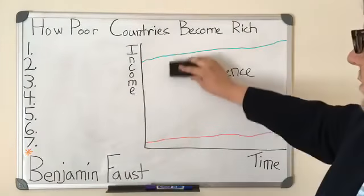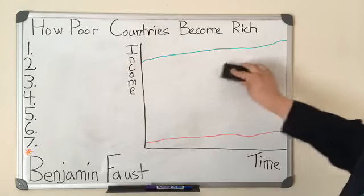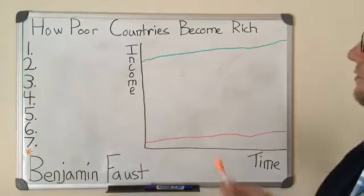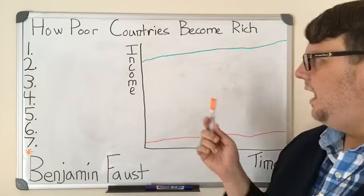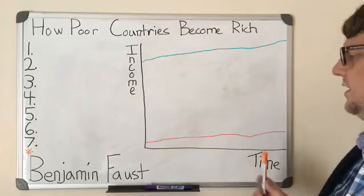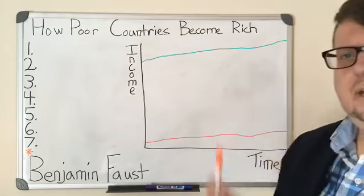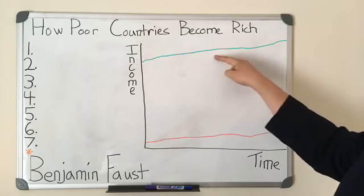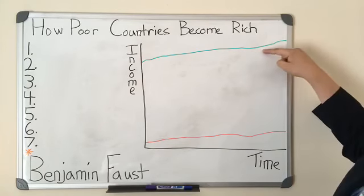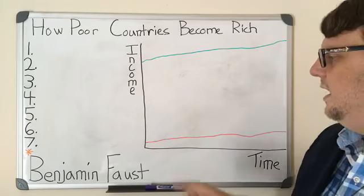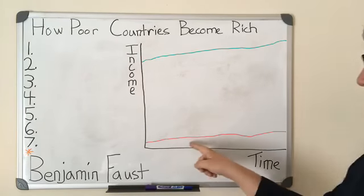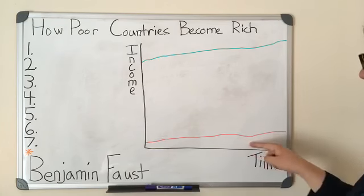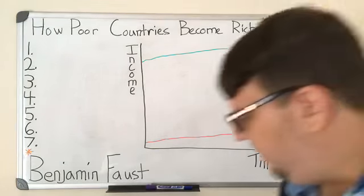Let me give you a little chart here. The vertical axis represents income — how much is coming in per year — and the horizontal axis is time. In green, I've put the rich countries. As you'll notice, they're growing, but their growth in income is slow. Sometimes it stalls out, may even go down a little bit, but it keeps growing. Poor countries stay pretty low, but they might have some growth patterns as well.